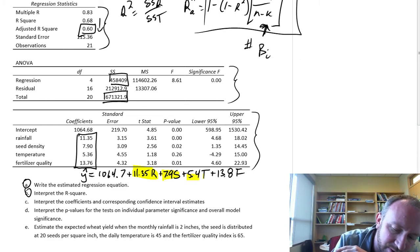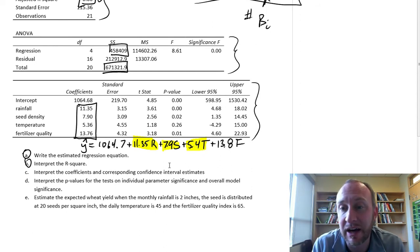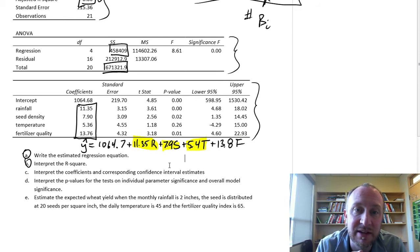On temperature, 5.4, this is measured in Fahrenheit, so for each additional degree Fahrenheit, each additional degree, we see an increase of 5.4 pounds of wheat.